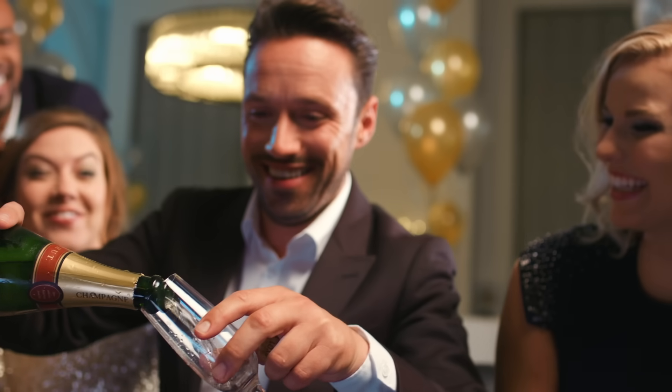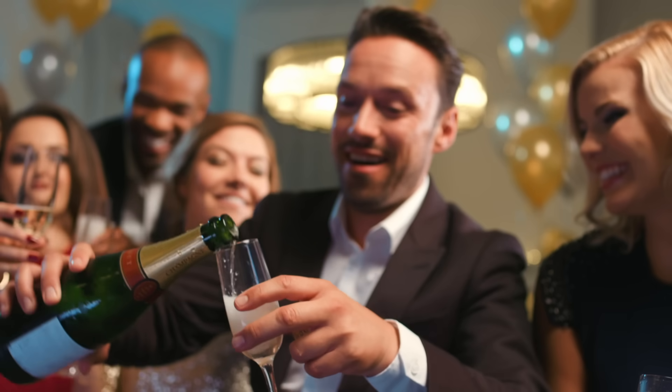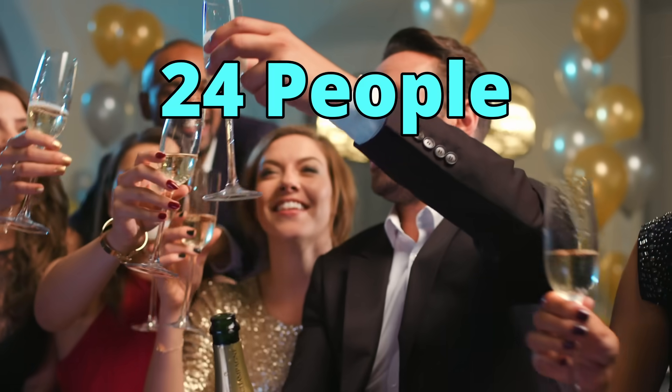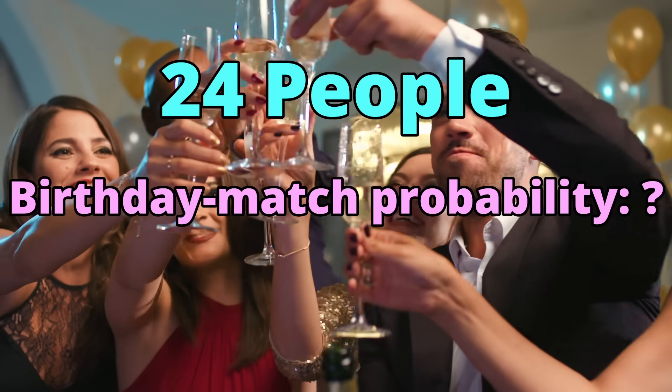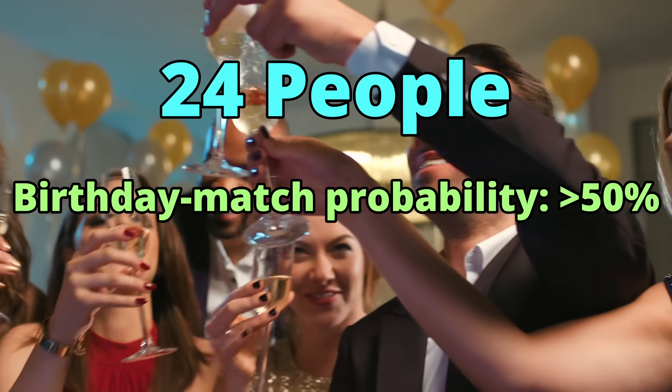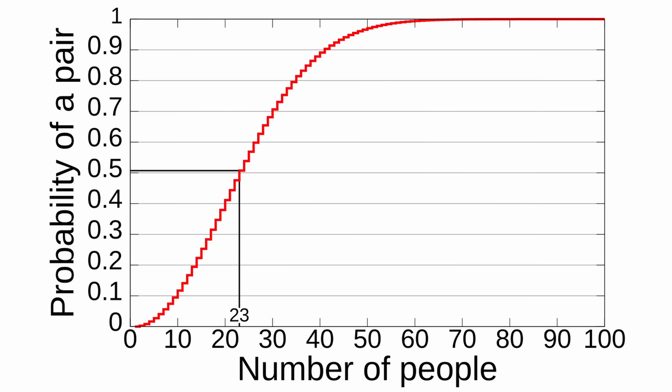3. The birthday paradox. Suppose you're at a party attended by two dozen people. What's the probability that two of them share the same birthday? It's more than 50%. You can calculate the probability of that happening for any number of people and it makes a surprising jump at about 23. If you have a group of 60 people, the probability that two of them share a birthday is larger than 99%.